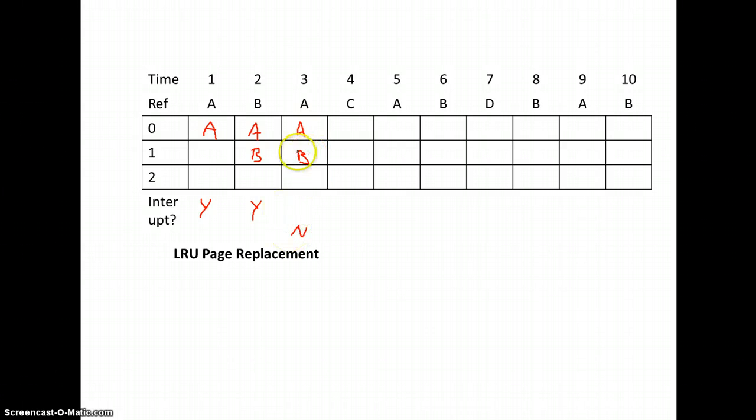The next point in time, our memory is looking like this, our A, B. We're referencing A, so we did not have an interrupt. The next point in time, our memory is looking like this. We're looking for C, and this is what our memory looks like. B already is in memory.